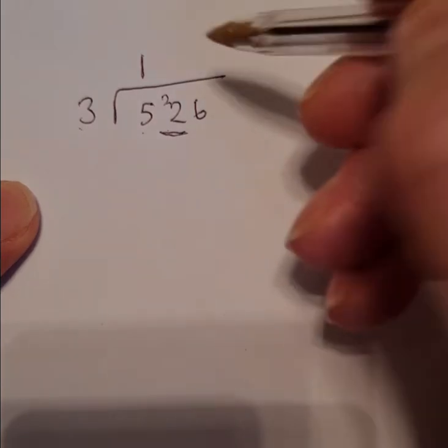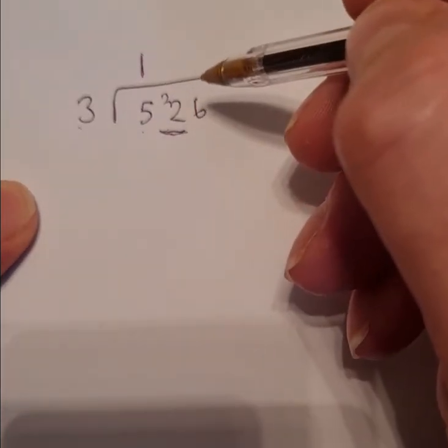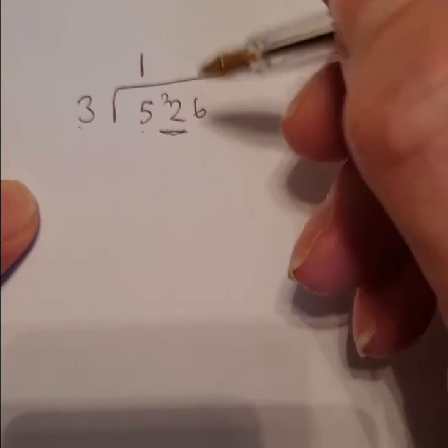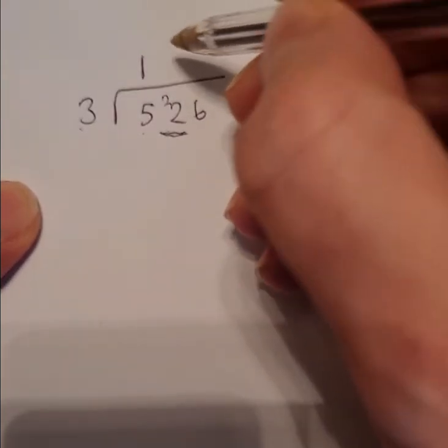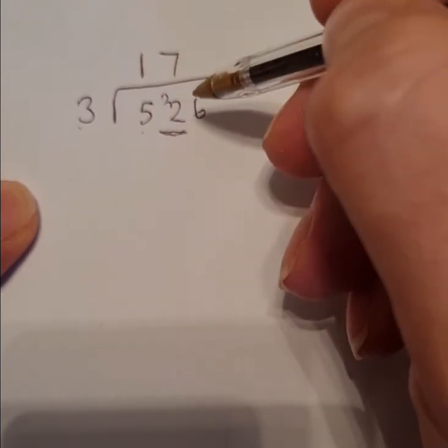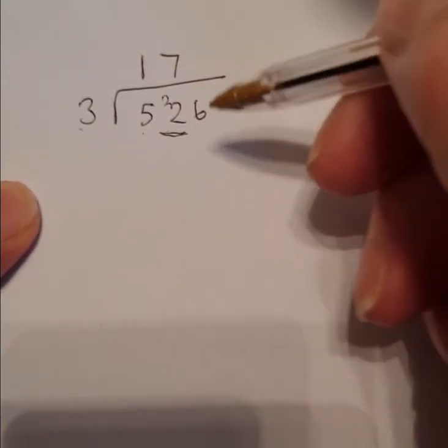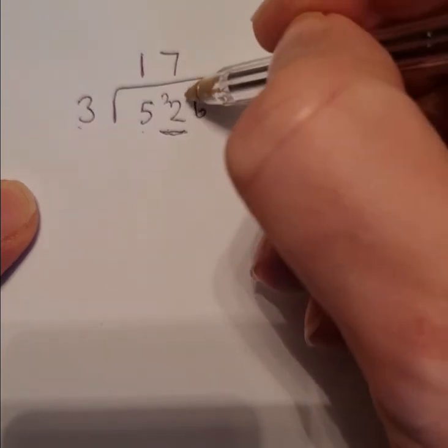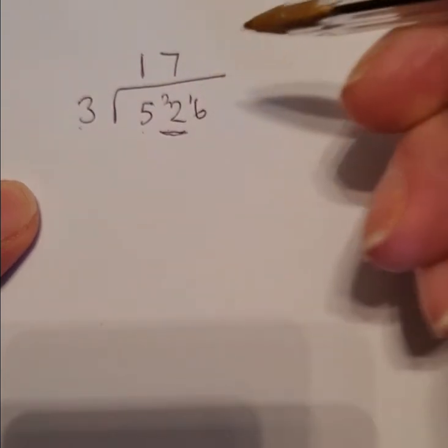Well I know from my times tables that 7 times 3 is 21. That's as close as I can get without going over 22. So my answer is 7 which goes above. 7 times 3 is 21 but I want 22 so I've got one left over. So my one remainder goes there.